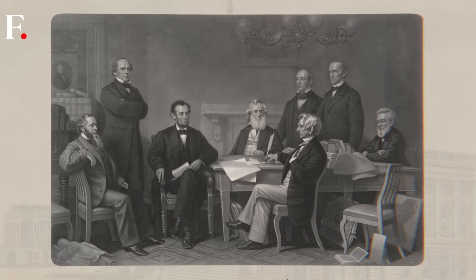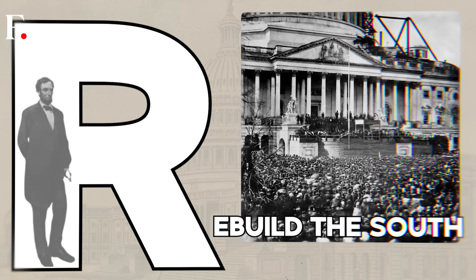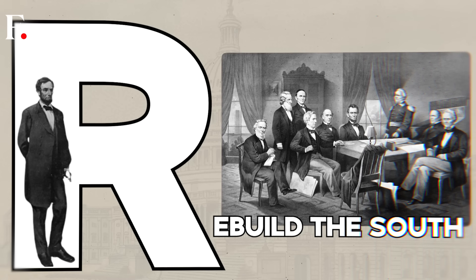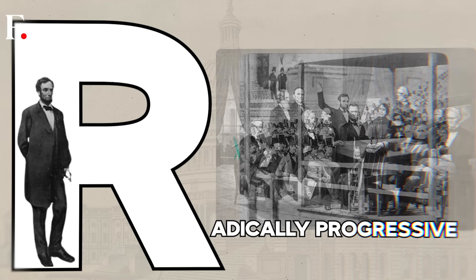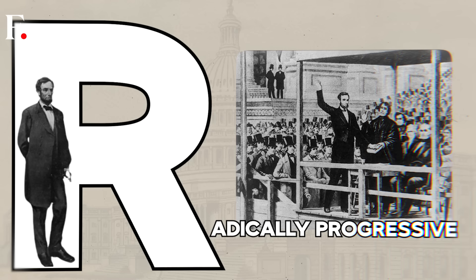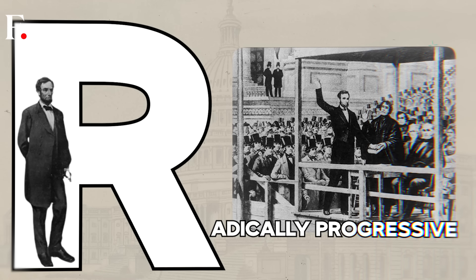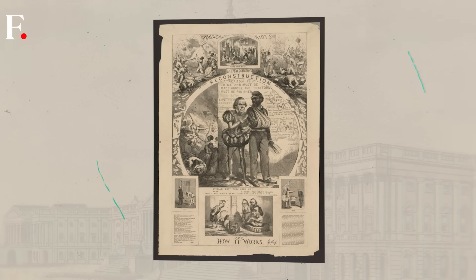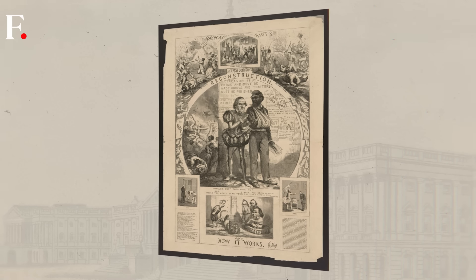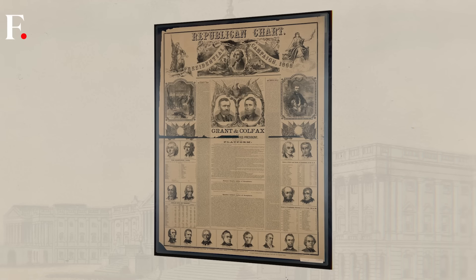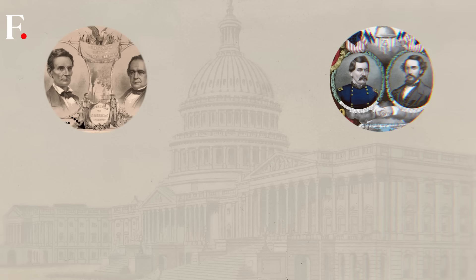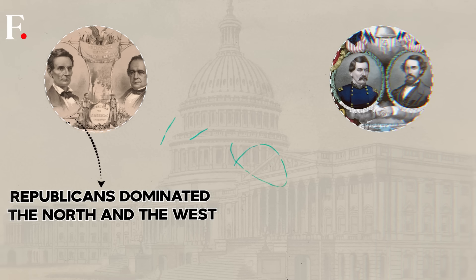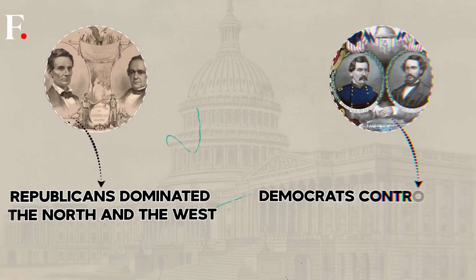The Republicans led the Reconstruction efforts and helped rebuild the South. A faction in the party also pushed for voting rights for African Americans — and got that done too. Believe it or not, the party was seen as radically progressive. As for the Democrats, they were associated with white supremacy. The Civil War really highlighted the divisions in the country: Republicans dominated the North and the West, while Democrats controlled the South.